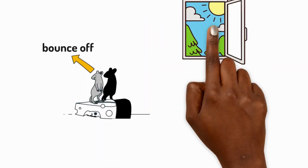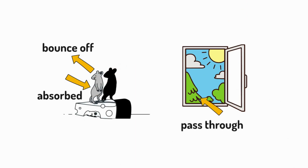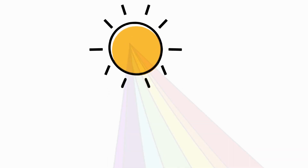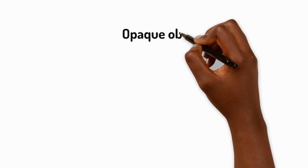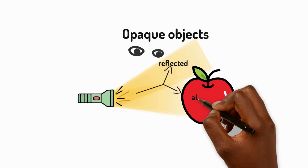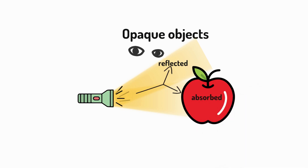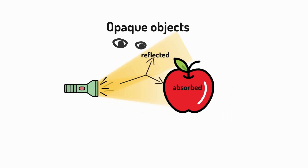We've previously learned that when light hits an object, it can bounce off, pass through, or be absorbed. We've also learned that sunlight is in fact a range of different colours, and when sunlight hits an object, not all of the colours behave in the same way. In opaque objects, some colours are reflected and some are absorbed. The colour of the object that we see depends on which colours are reflected and which are absorbed.